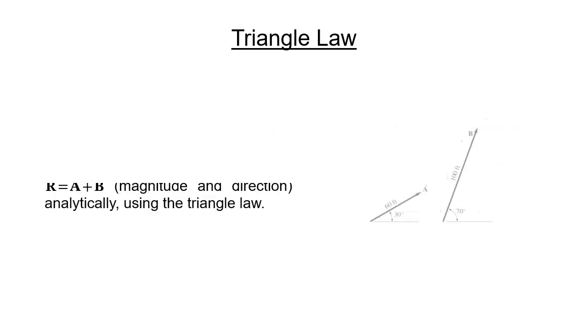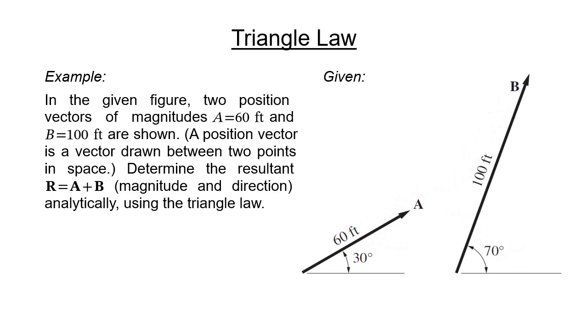Let us have an example using the triangle law. In the given figure, two position vectors of magnitudes 60 feet and 100 feet are shown. Take note that a position vector is a vector drawn between two points in space. Determine the resultant vector R, which is equal to vector A plus vector B analytically, using the triangle law.